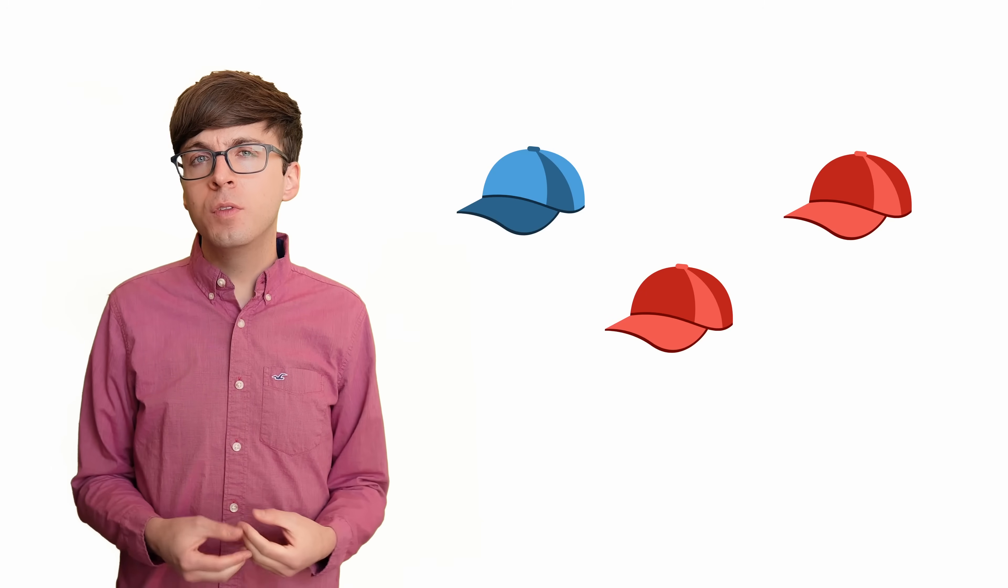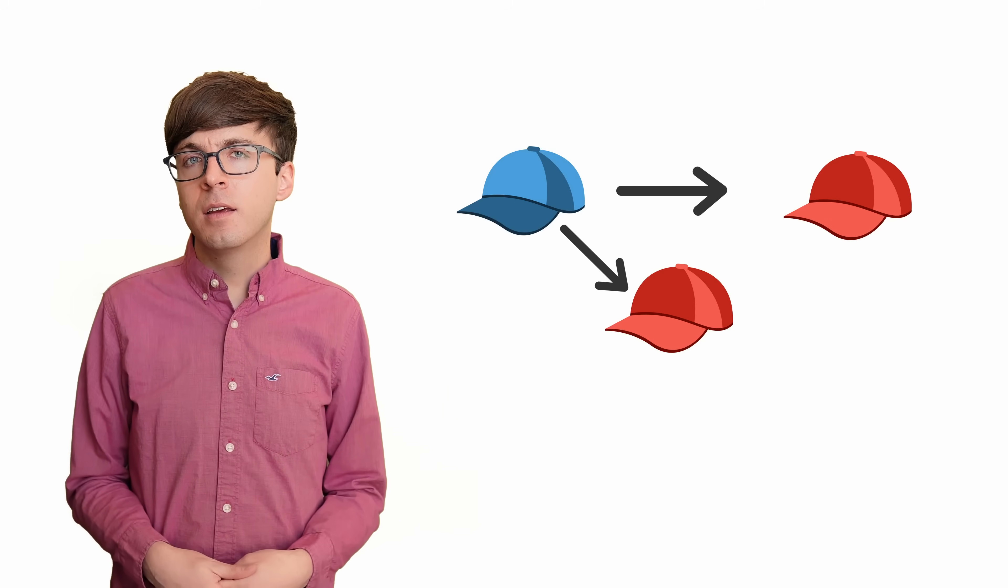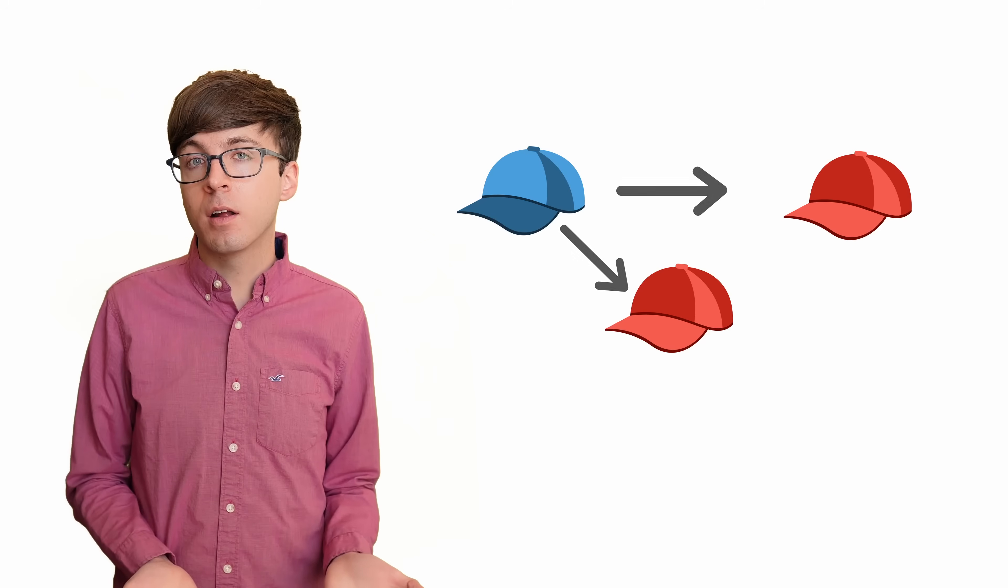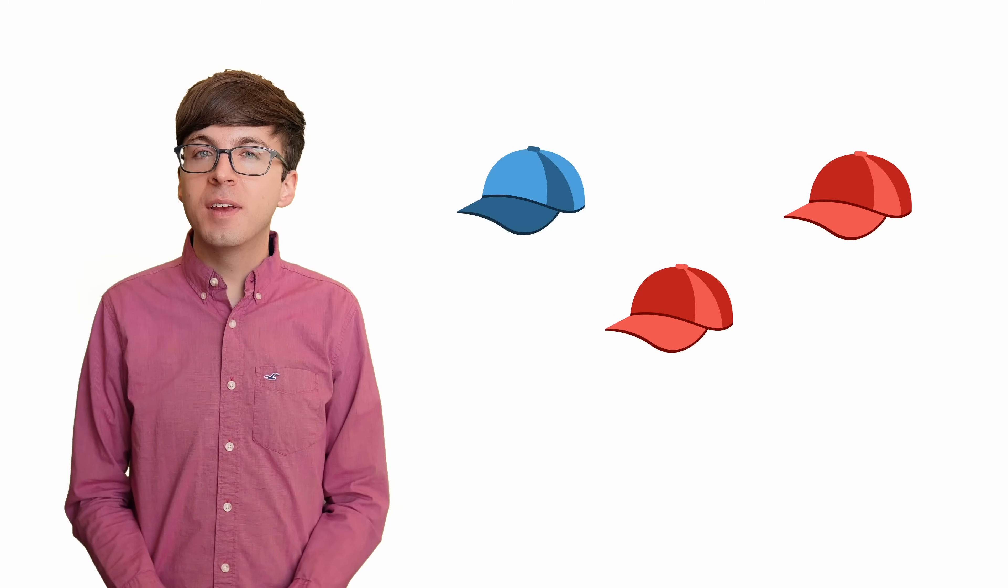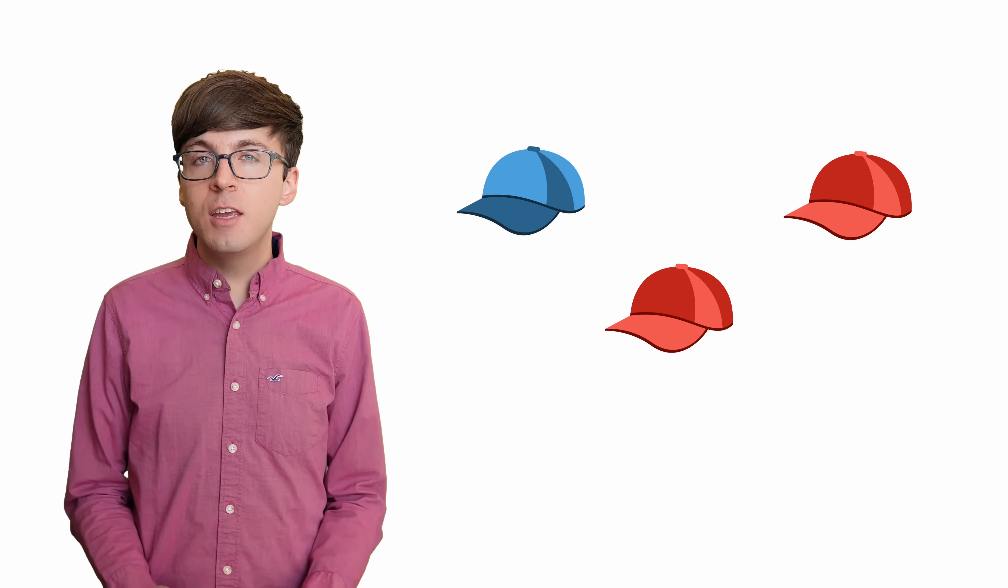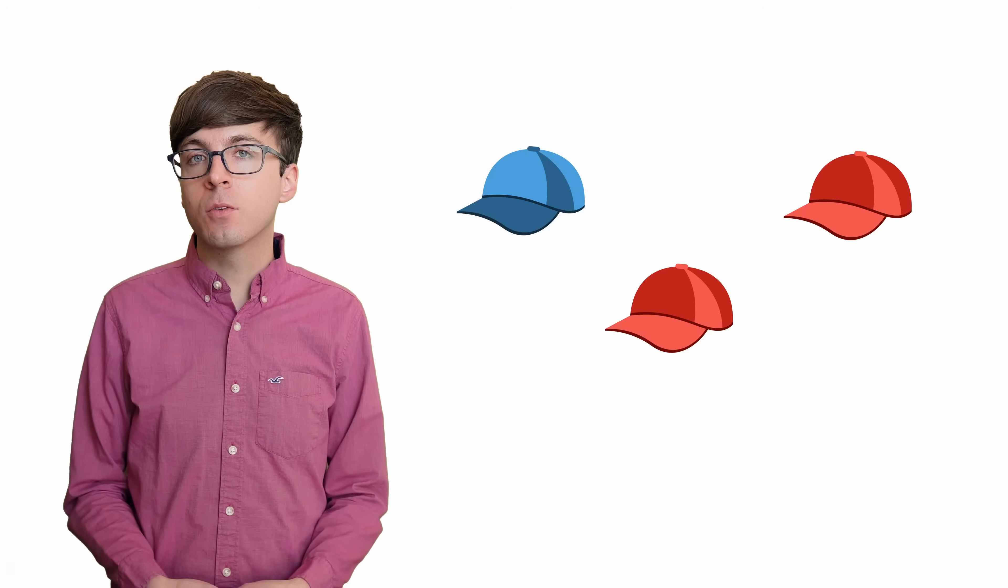Each prisoner only sees the other two hat colors, which are selected independently of their own hat. So how could that provide any extra information to improve the odds? The trick to this problem is that the prisoners don't have to decide in advance who will guess. They can each observe the other two hat colors and then decide if they will guess or not.